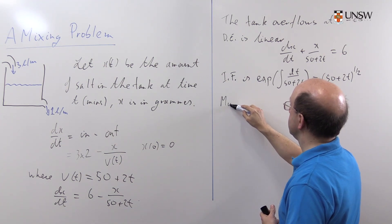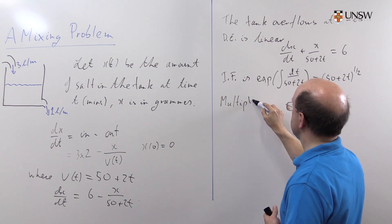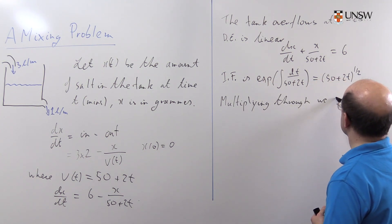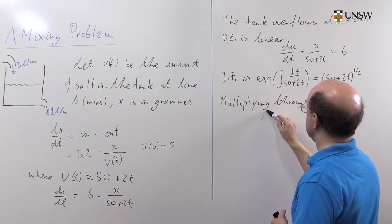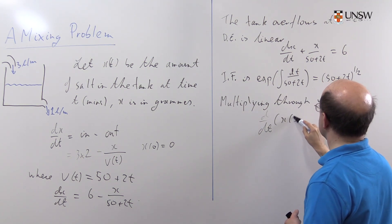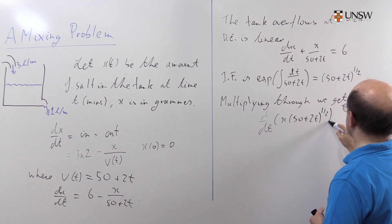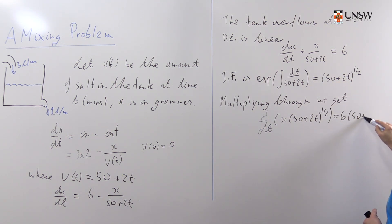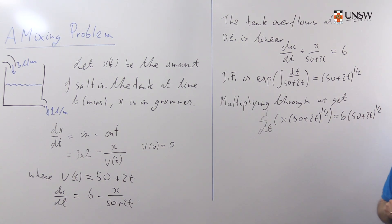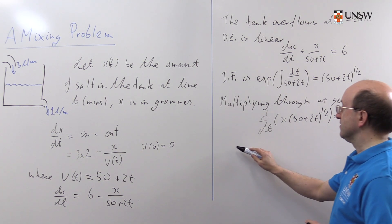Multiplying through, we get d/dt of x times (50 plus 2t) to the 1/2 equals 6 times (50 plus 2t) to the 1/2. This is our differential equation. Well, left-hand side simply enough, we're going to integrate with respect to t. We're going to integrate this side with respect to t as well.